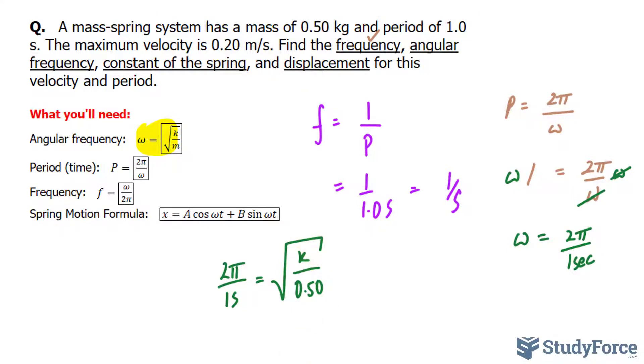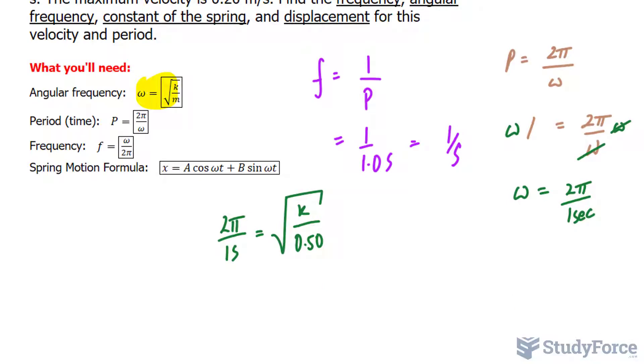We need to solve for k, and that's a simple exercise of algebra. We will raise both sides to the power of 2, which eliminates the square root. Then we multiply both sides by 0.5. So I'll write down 0.50 kilograms multiplied by 2π over 1 second to the power of 2, and that gives us our value of k.